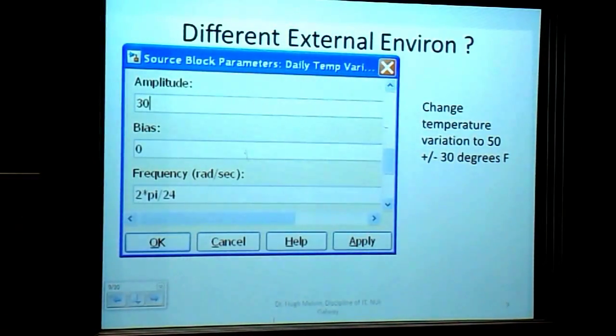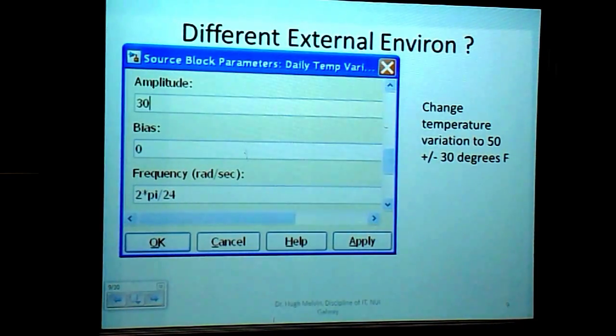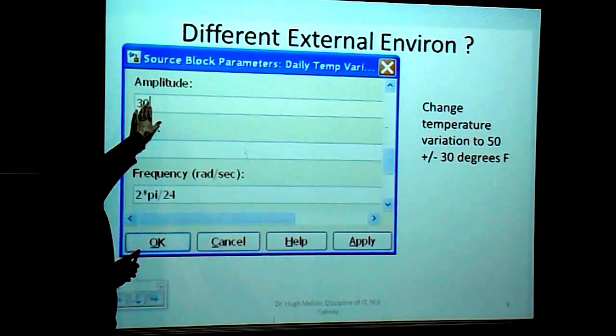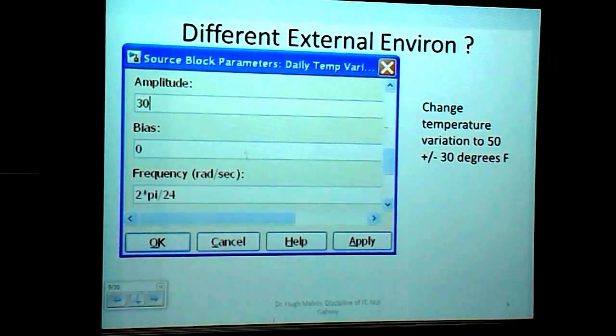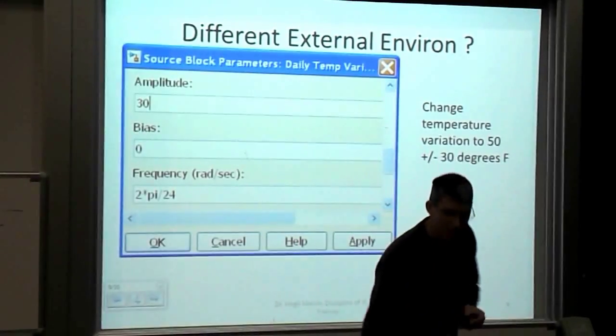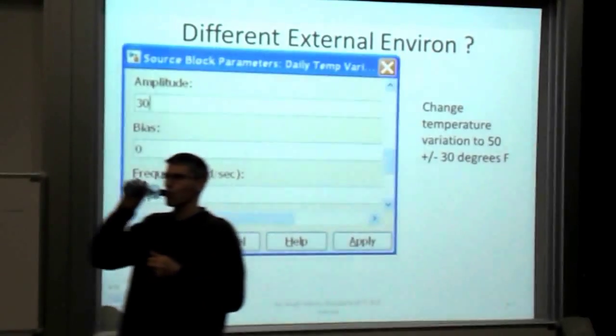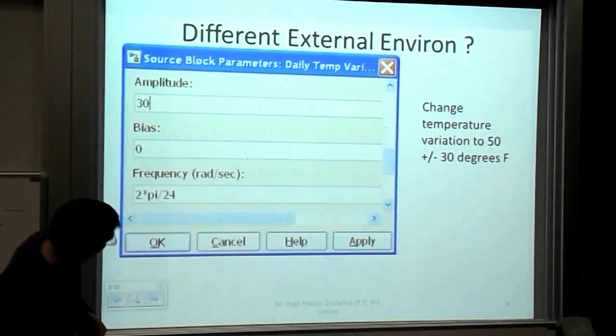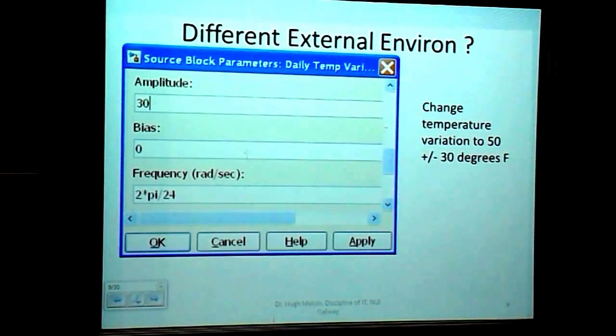As you can see here, for these periods, the heater cuts out mainly because the outside temperature is approaching the desired temperature. What happens if we change the external environment? If we change the temperature variation to 50 plus or minus 30, what do you think will happen? What will happen to our heating requirement? What's 50, Kevin, in Celsius? Maybe you don't know. It's like 10 degrees Celsius plus or minus 15.